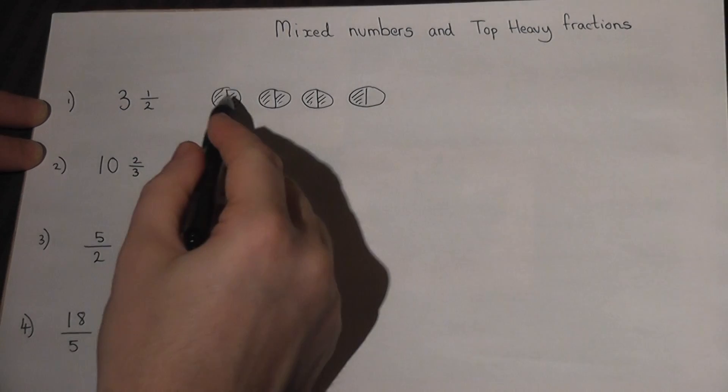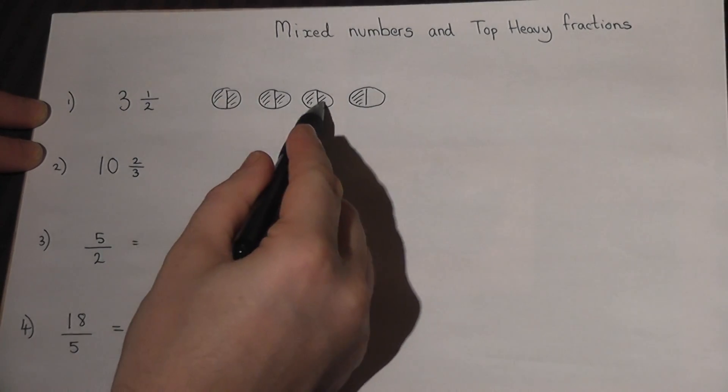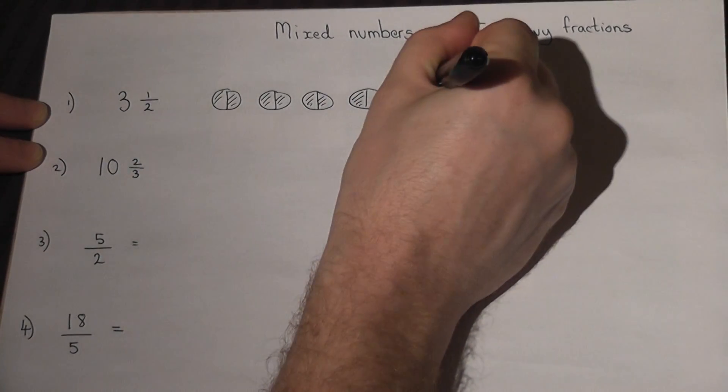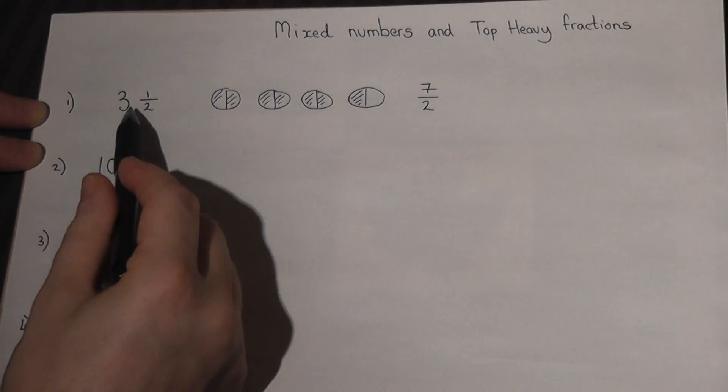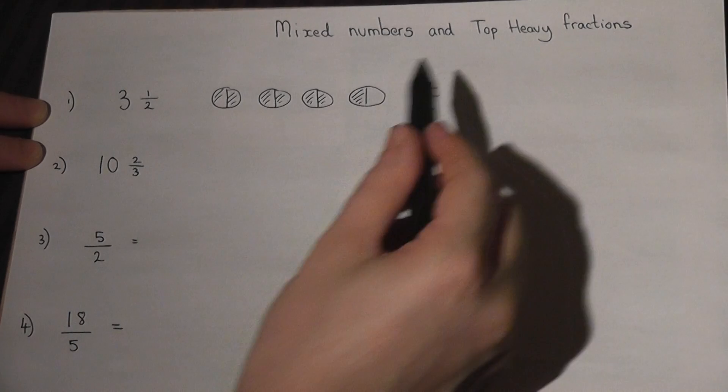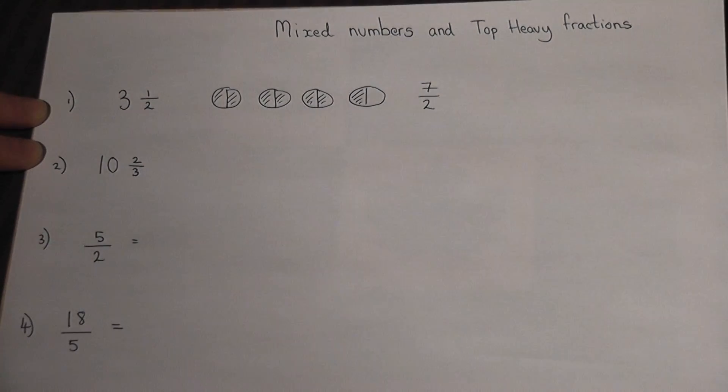So altogether there's one, two, three, four, five, six, seven - there are seven halves. So three and a half as a mixed number is the same as seven halves as a top heavy fraction.